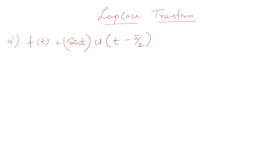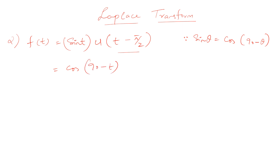First, we need to make this function compatible with the argument t minus π/2. Since t is given, we know that sine of θ equals cos of (90° minus θ), so we can change sine t into cos(90° minus t), where 90° is π/2.